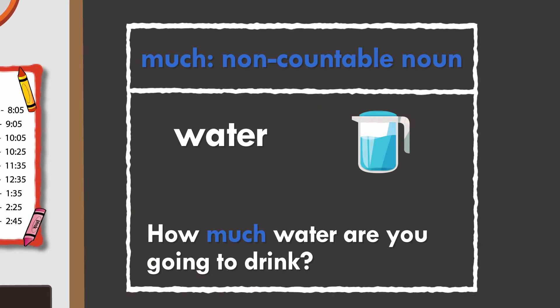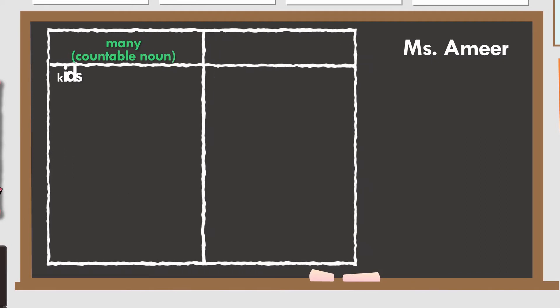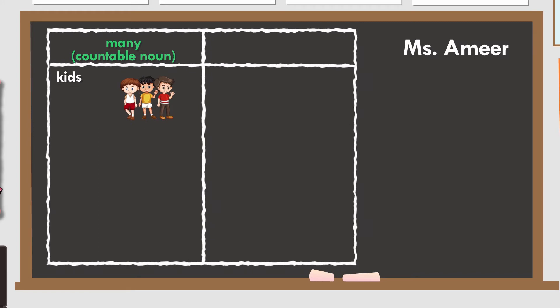Let's move on. Some more examples of countable nouns are, kids. How many kids are in a classroom?